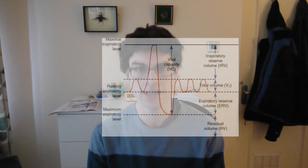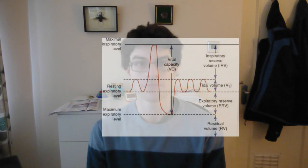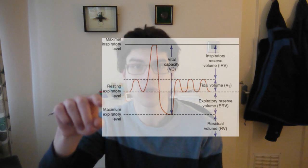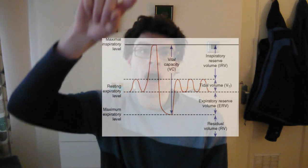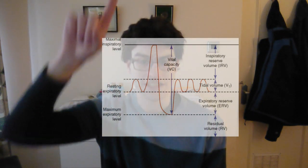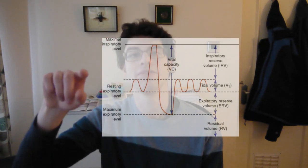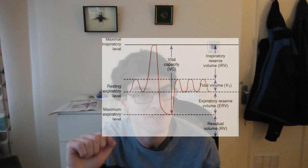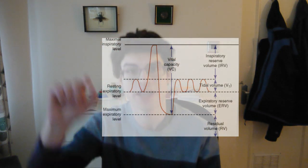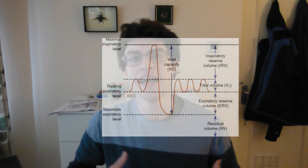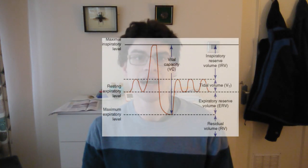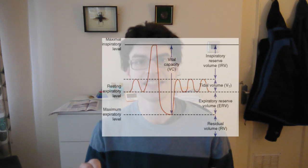Let's talk about the respiratory cycle. When you're breathing in and out normally, that's tidal volume — about half a litre. If I breathe all the way in as much as I can, that's inspiratory reserve volume, and if I breathe out as much as I can, that's expiratory reserve volume. Then there's residual volume, which is the amount of air left in the lungs after maximal expiration still participating in gas exchange — it's therefore different from dead space.